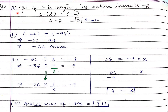Question 4 was fill in the blanks. The first part was: the sum of an integer and its additive inverse is blank. The question is asking, if you add an integer and its additive inverse, what would be the answer? We can understand this by an example. Suppose the integer is 2. The additive inverse of 2 is minus 2. If you add 2 and minus 2, obviously the answer will be 0. So the answer of this blank is 0.